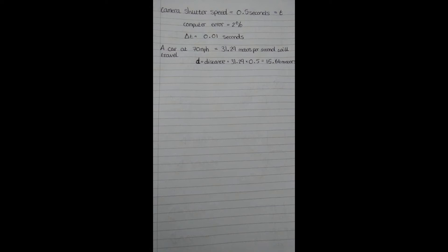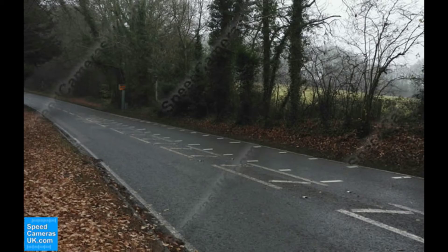Between the two measurements that the speed camera can take, a car travelling at motorway speeds will have travelled 15.64 metres. The distance measured on the floor, the lines on the floor in front of the speed camera, range anywhere between half a metre and two metres. So I've taken an average distance of separation between those lines, which are the secondary measurement for the camera, as one metre.